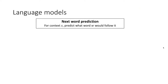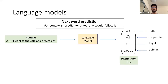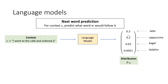What are language models? In the simplest terms, you can think of language models as next-word predictors. If you're given a context — that is, a piece of text S — you want to predict what word W can follow it. For example, if you have the context 'I went to the cafe and ordered a,' a language model would like to predict what the next word could be. It outputs a distribution P(S) over the vocabulary set, assigning high probabilities to words like 'latte' or 'cappuccino' that are more likely to follow this context.